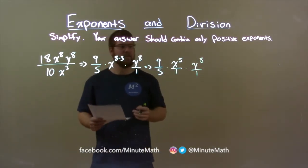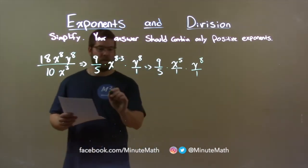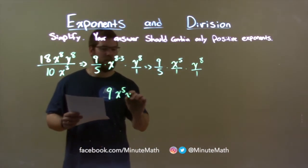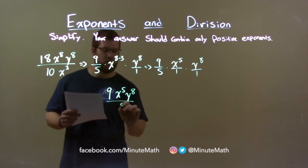We can combine everything together to get our final answer. We have 9x to the 5th, y to the 8th over 5.